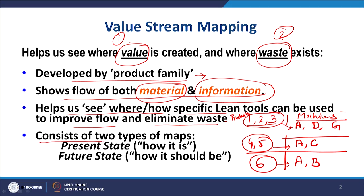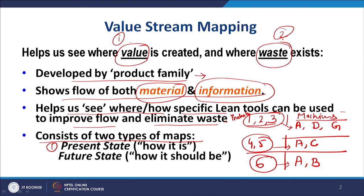Because value stream mapping gives you the idea of waste — where it is being generated, what type of waste is generated, and what is the quantity of that waste — based on all these inputs you will have the choice of selecting a particular lean tool. The important thing is where you are right now — that is your present status, your current state. How much time are you taking, how much waste are you generating, what is the percentage of value-added time out of the total time taken in making that product.